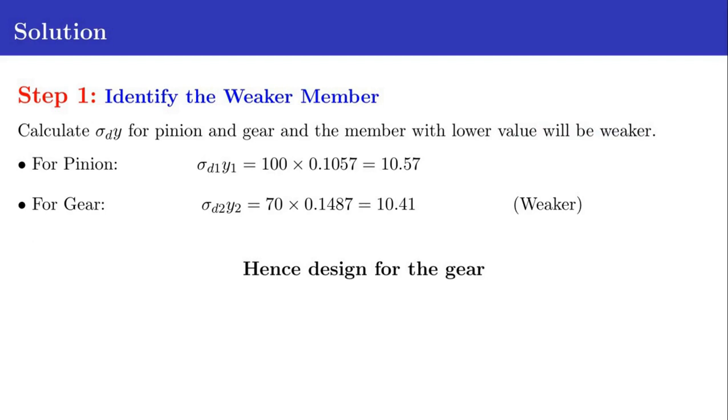In the first step of the solution we identify the weaker member. To identify the weaker member we calculate sigma D times Y for pinion and gear. The member with the lower value of sigma D times Y will be weaker. For pinion sigma D1 Y1 equals 10.57, and for gear sigma D2 Y2 equals 10.41. So sigma D Y is lower for gear, hence it is the weaker member, and further design calculations will be based on gear.